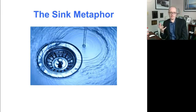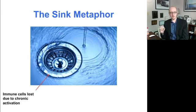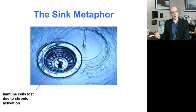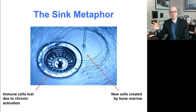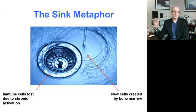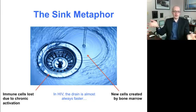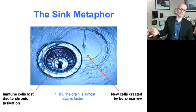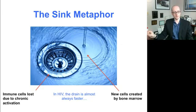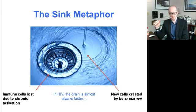It turns out it's like a sink. You have partly the drain — immune cells filtering down the drain because of chronic immune activation and apoptosis — but there is actually water pouring into the sink: new cells generated by the bone marrow, and some HIV-infected cells do die. The problem is that over time in HIV, the drain is almost always faster. Eventually this balancing act starts to fall apart, and that progressive loss of cells gets to a place where the immune system effectively can't protect itself.